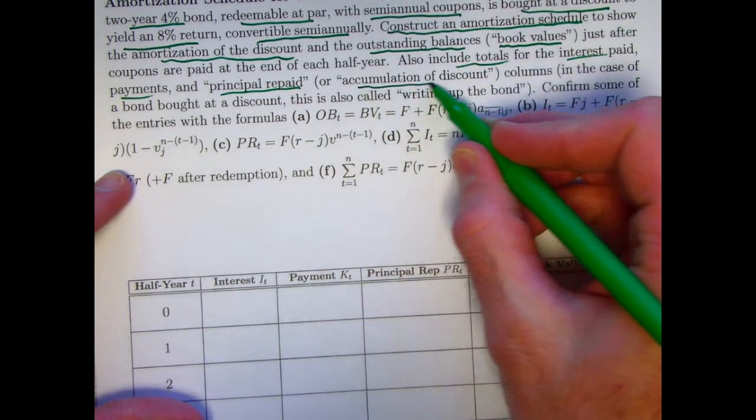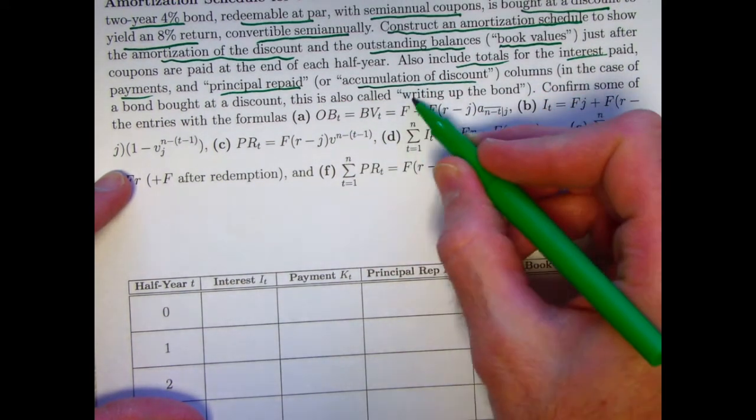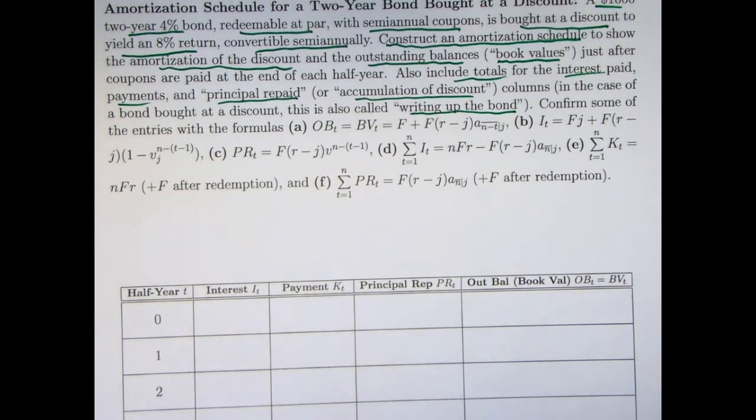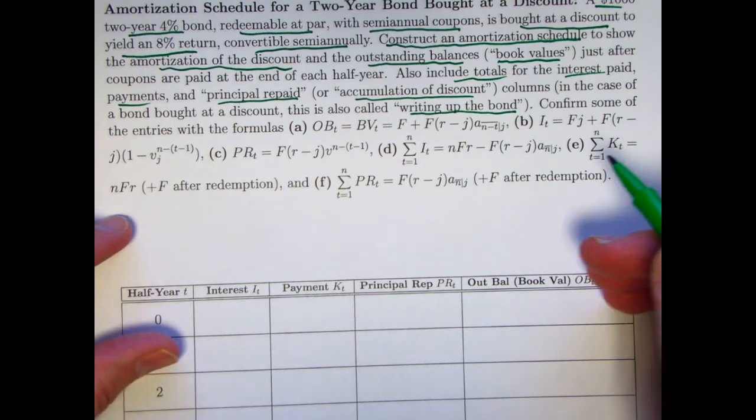Principal repaid, sometimes called an accumulation of discount, also called writing up the bond when you buy it at a discount. When you buy it at a premium, you can call it writing down the bond instead of writing it up.